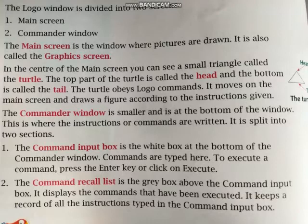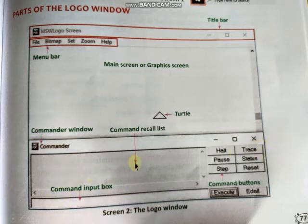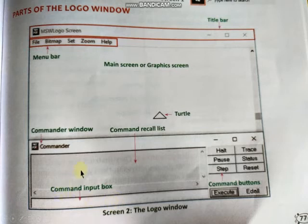The commander window is smaller and is at the bottom of the window. This is where the instructions or commands are written. The commander window is smaller than the main screen and is located at the bottom part of the Logo window.